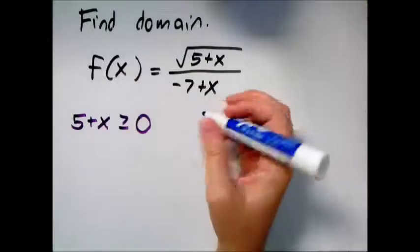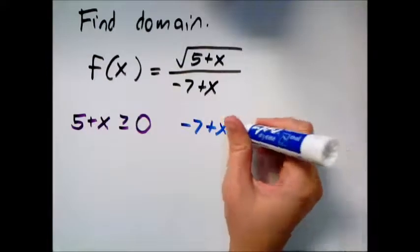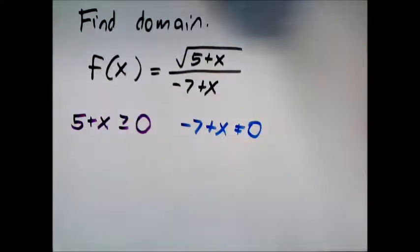But then on the bottom whatever's in my denominator also has to be not equal to 0 because I can't be dividing by 0. So in this one there's kind of two issues.